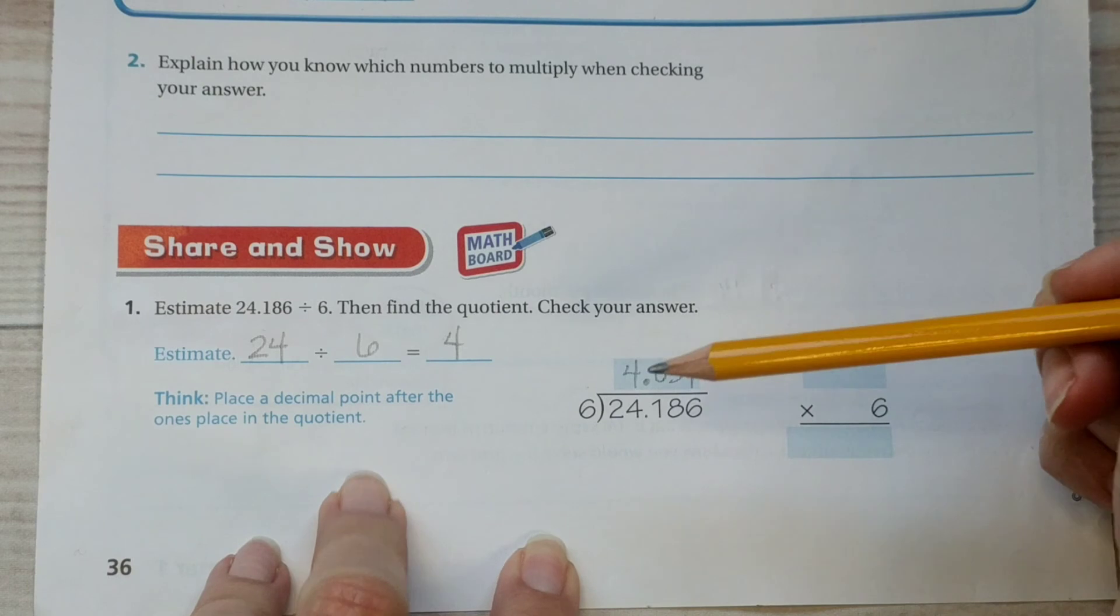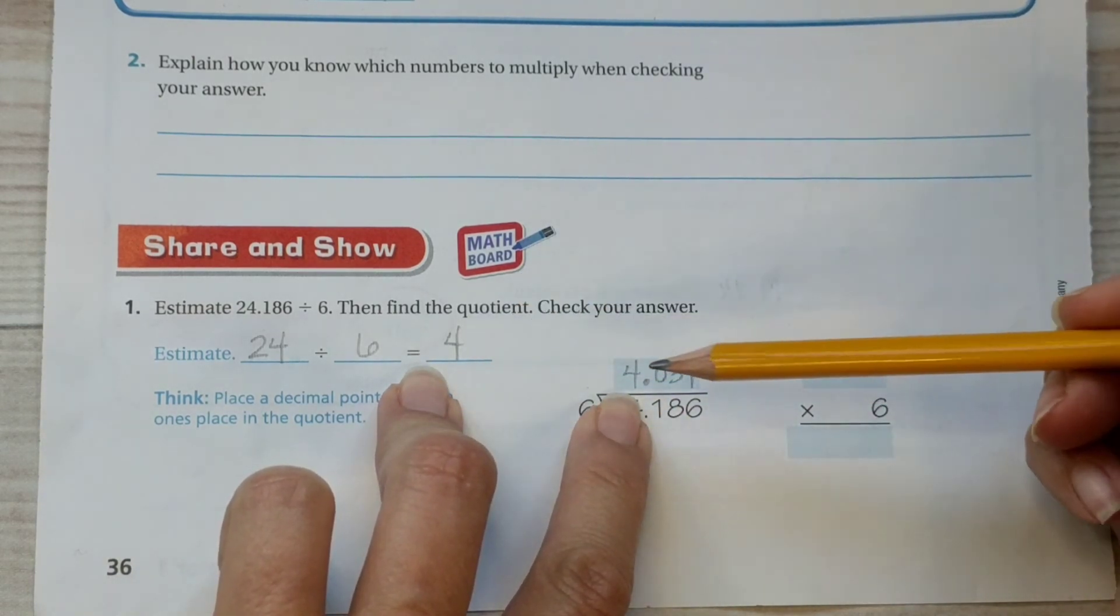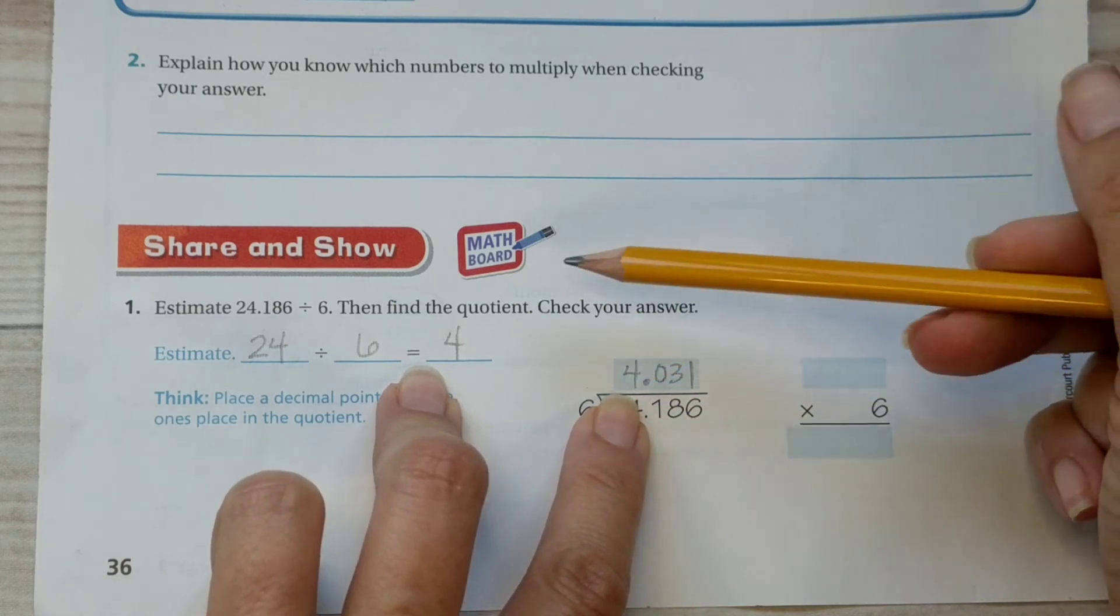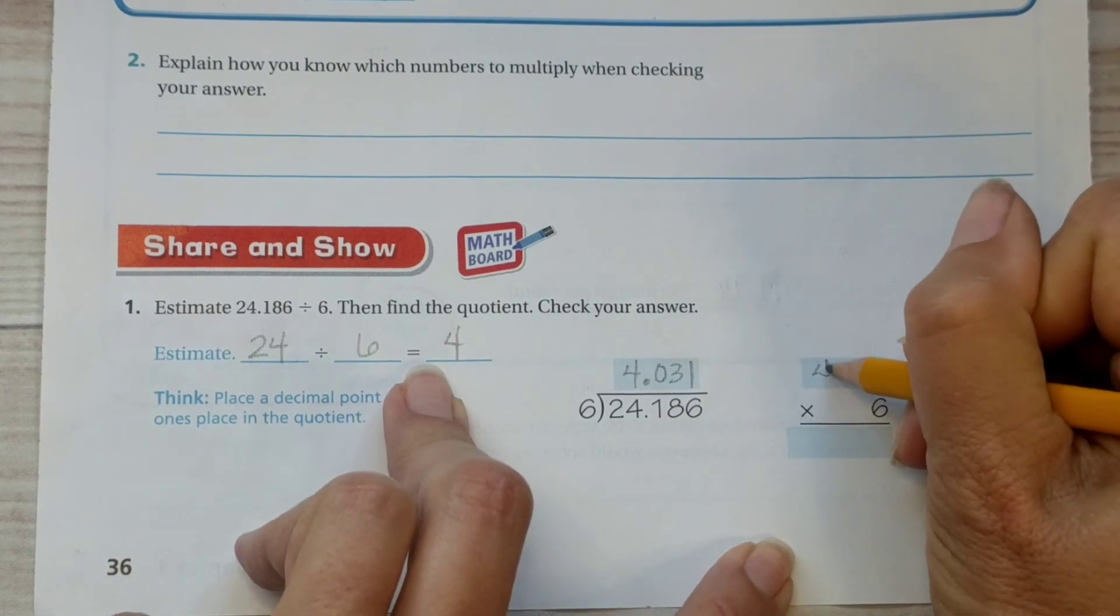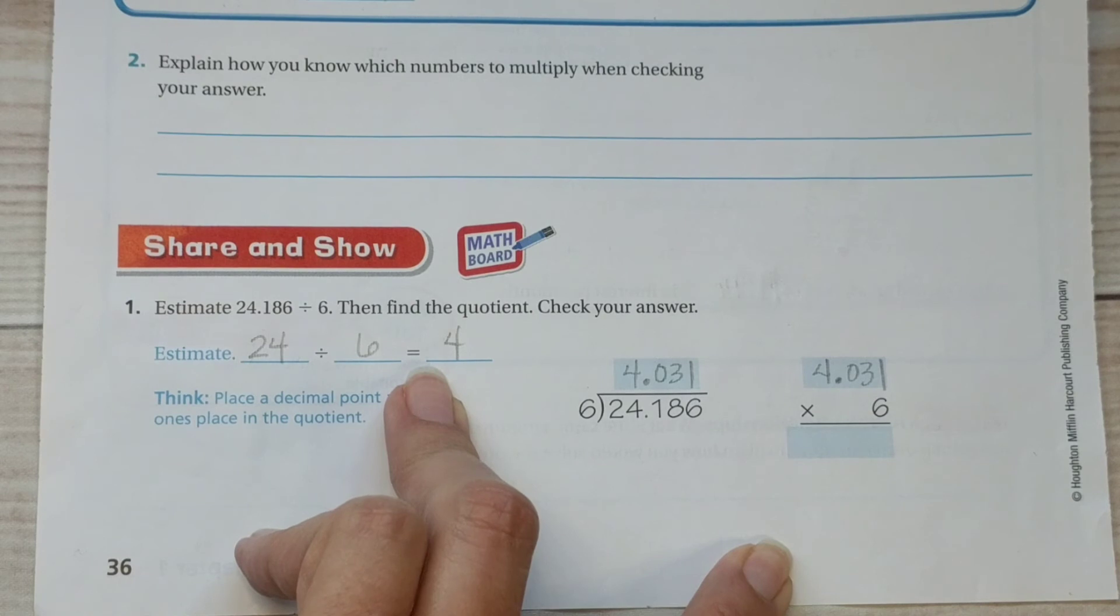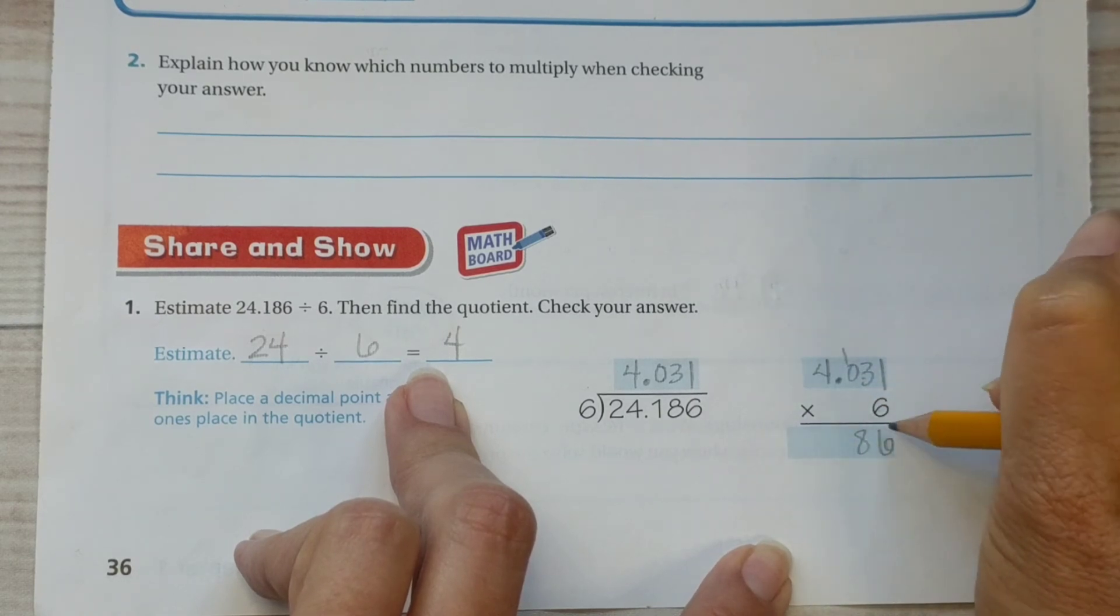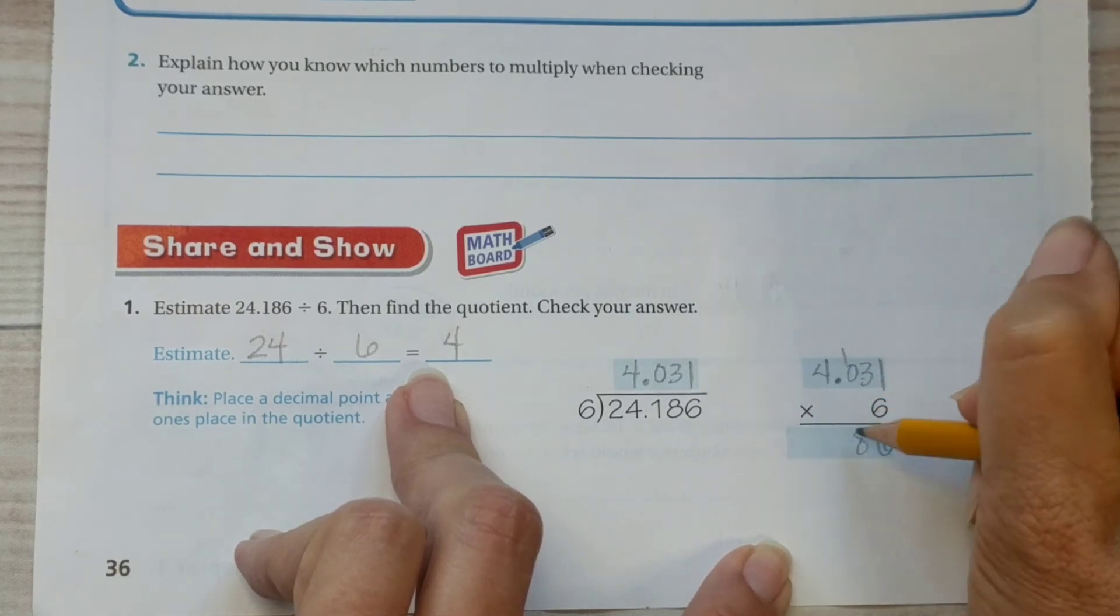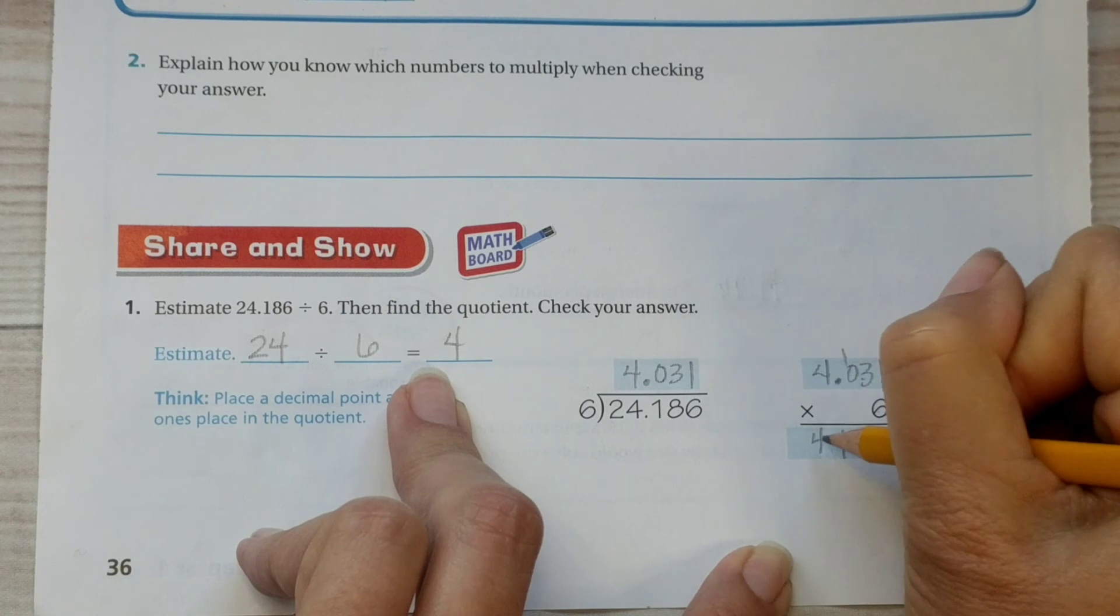Now, so is this reasonable? Yes, it is reasonable because we ended up with four here and four there. So, four and thirty-one thousandths is very close to four. Let's go ahead and check our answer to make sure that it is perfectly accurate. Six times one is six. Six times three is eighteen. Regroup the one. Six times zero is zero, plus one more is one. Six times four is twenty-four.